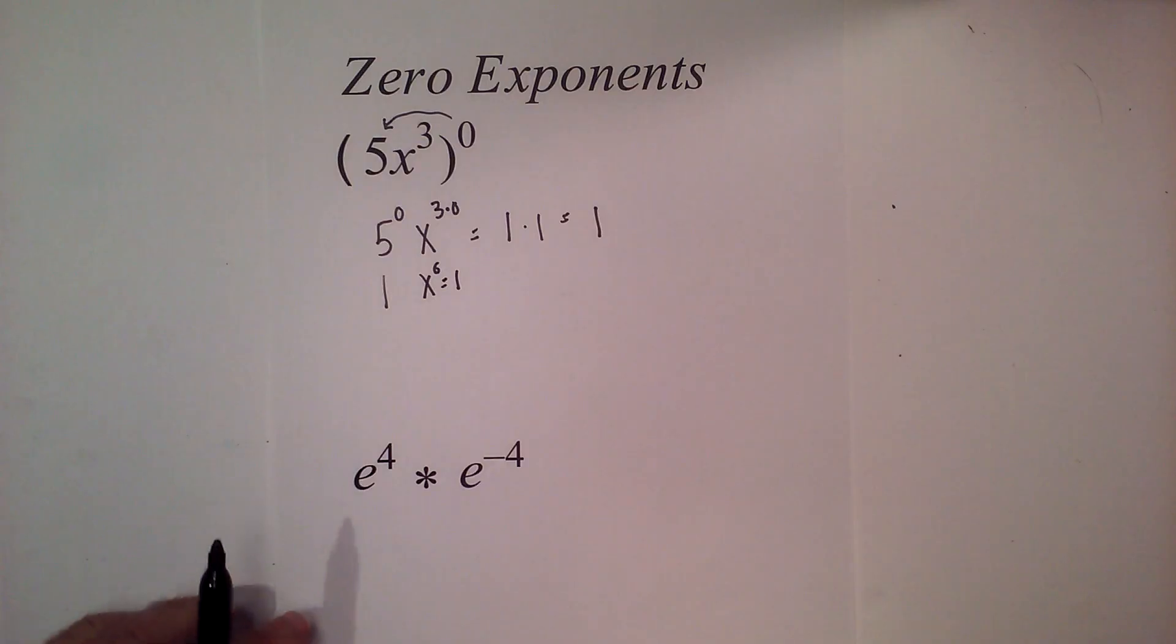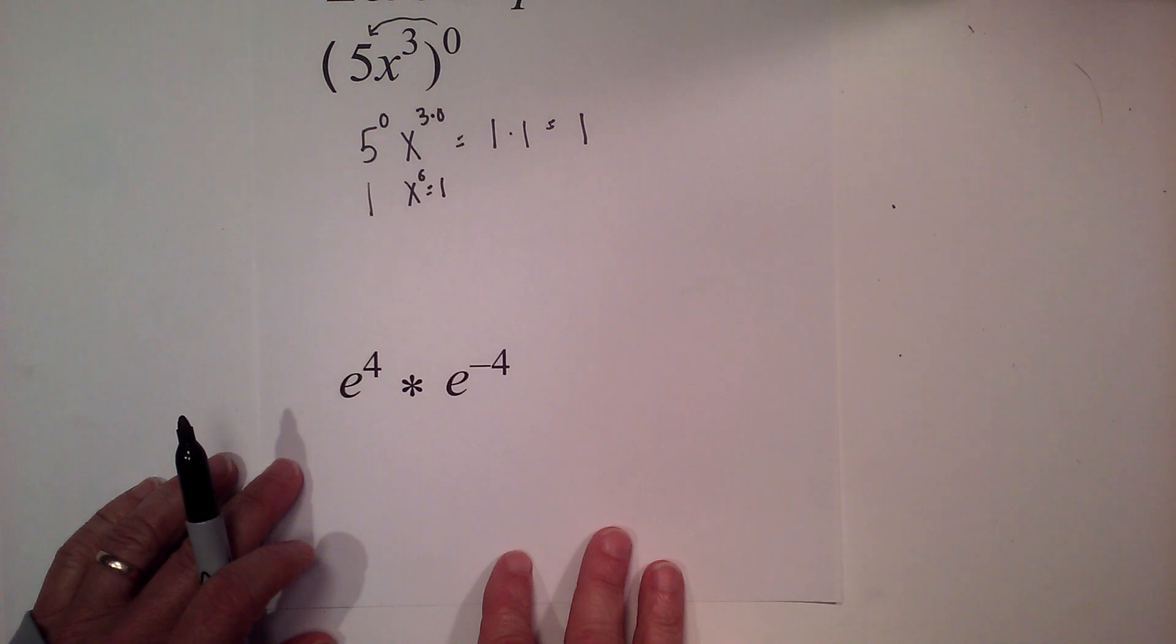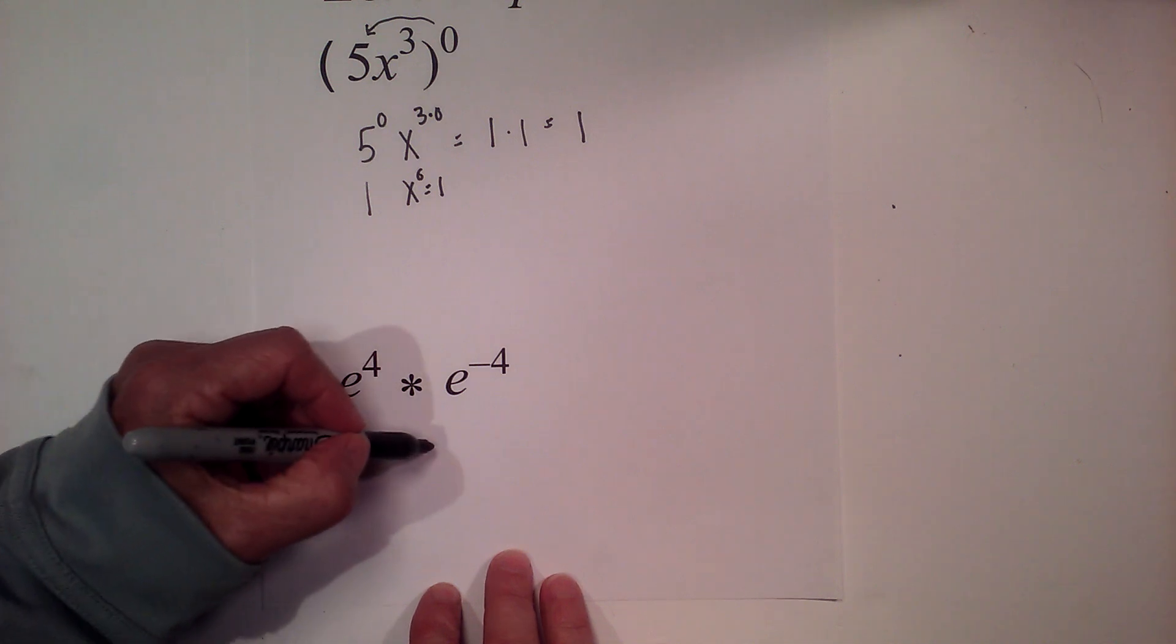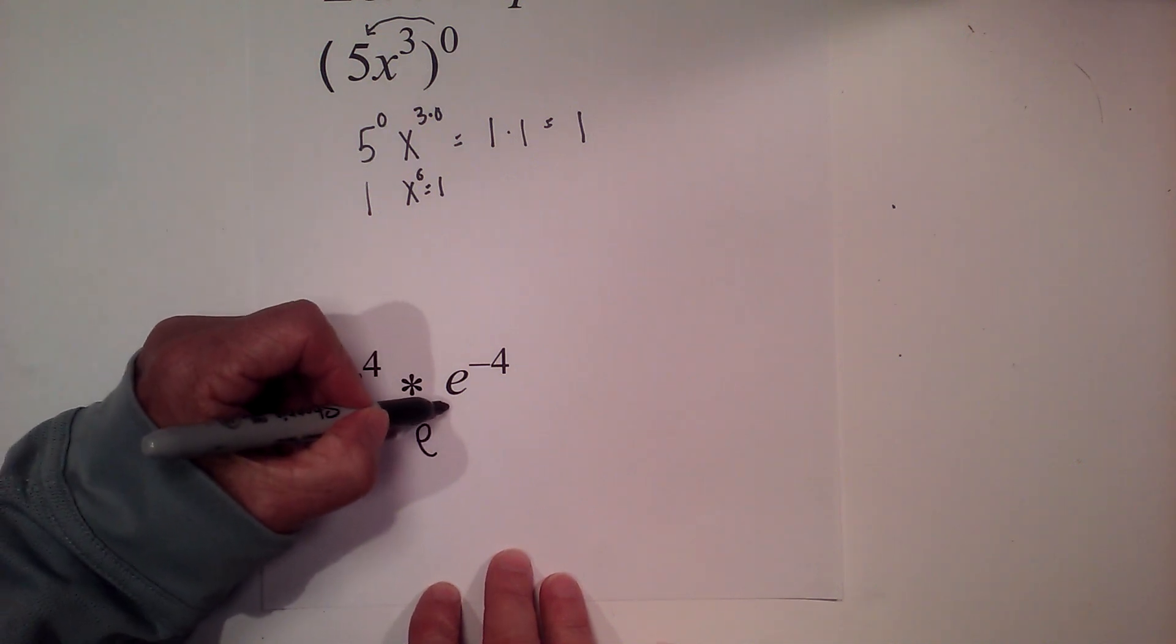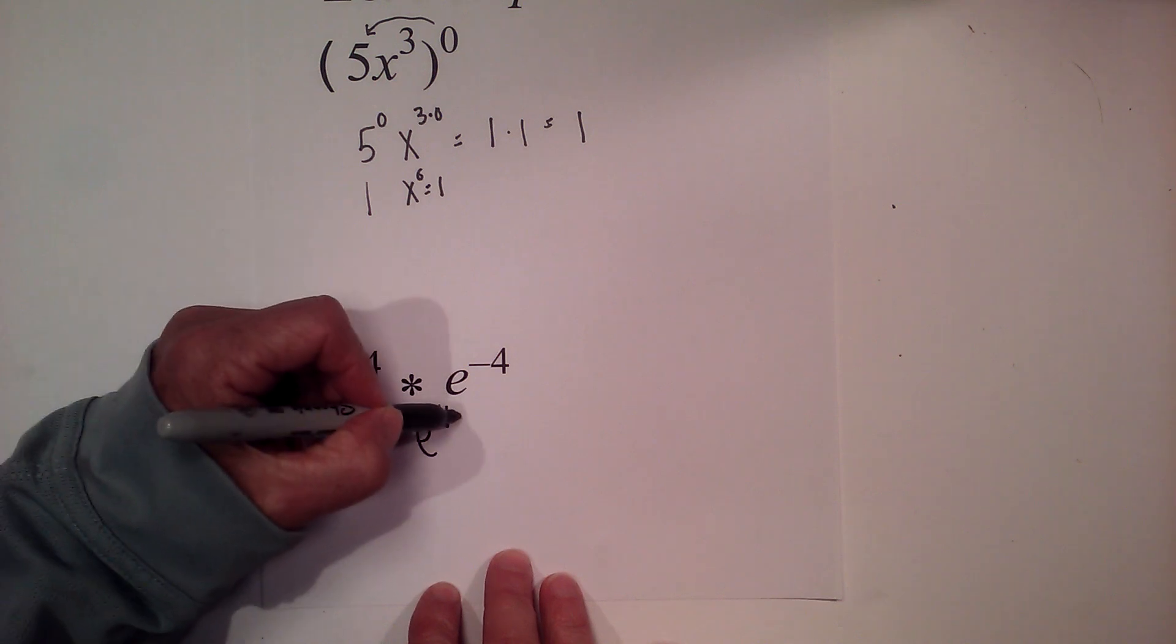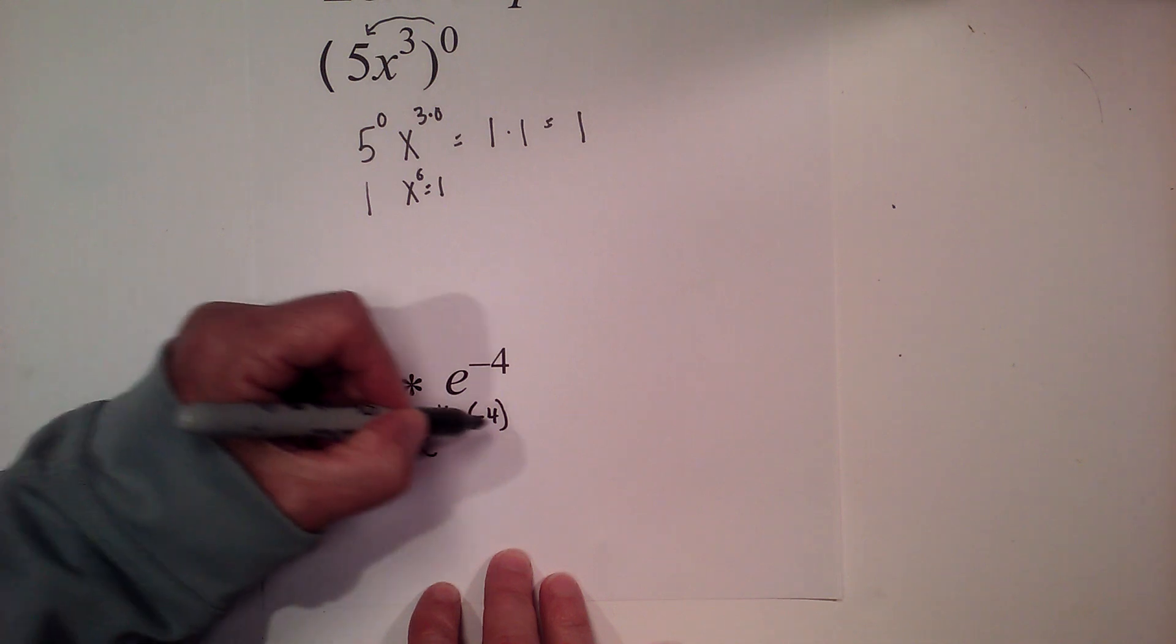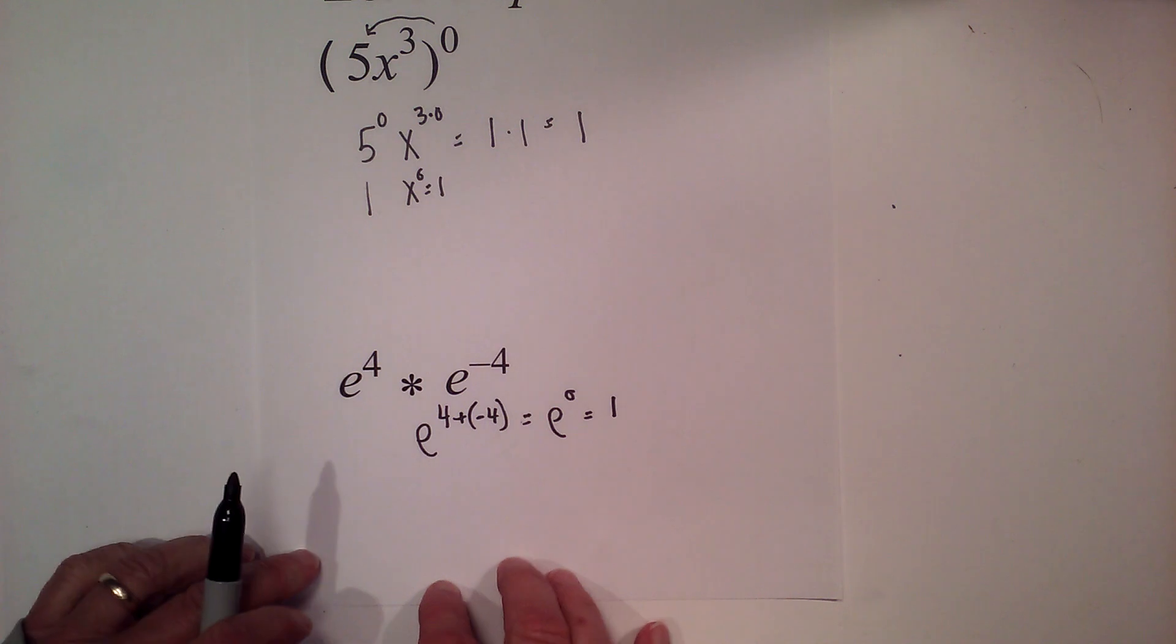Next we have e to the 4th times e to the negative 4th. Well, this becomes, when you multiply you are adding the exponents, plus a negative 4, and this becomes e to the zero power which is equal to 1.